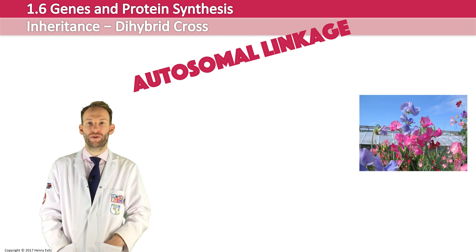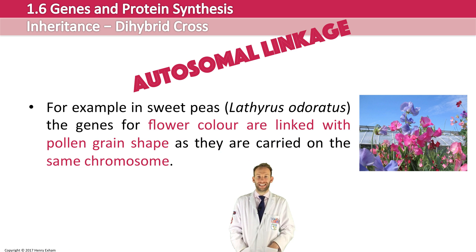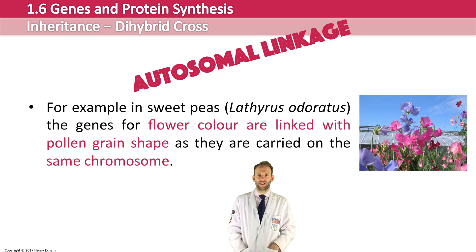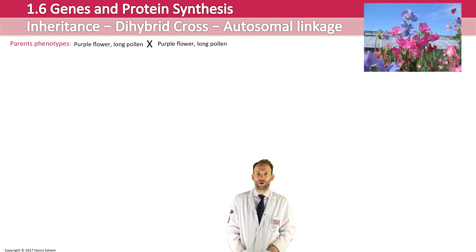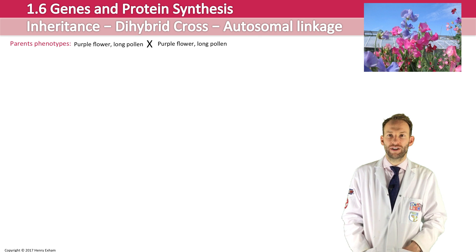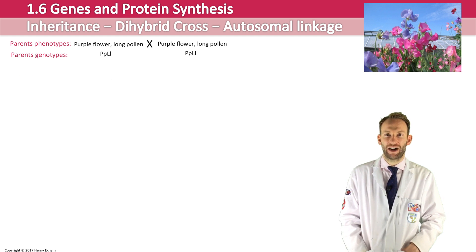Let's look at this example in sweet peas. The genes for flower colour are linked with pollen grain shape as they are carried on the same chromosome. Two sweet pea plants were crossed — they had purple flowers and long pollen, and it was known they were heterozygous, with genotypes big P, little p and big L, little l.